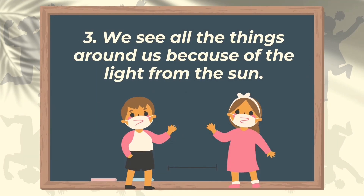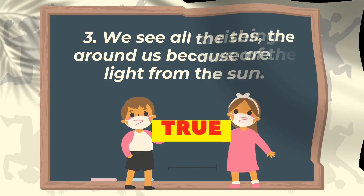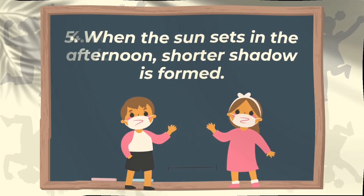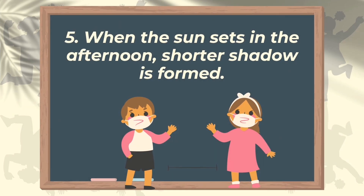Number 3: We see all the things around us because of the light from the sun. The answer is true. Number 4: When the sun rises, longer shadows are formed. The answer is true — every morning when the sun rises, longer shadows are formed. Number 5: When the sun sets in the afternoon, shorter shadow is formed. The correct answer is false — same as when the sun rises, longer shadows are formed.